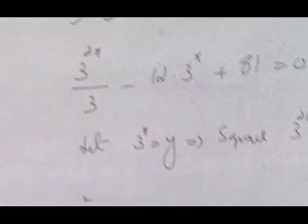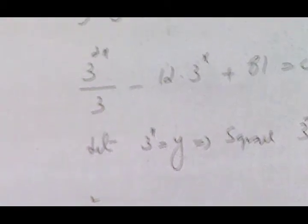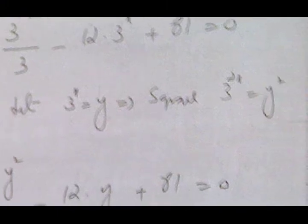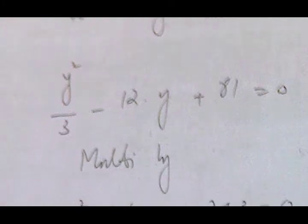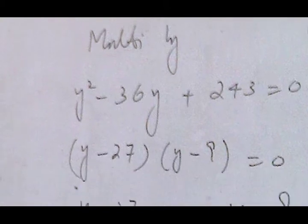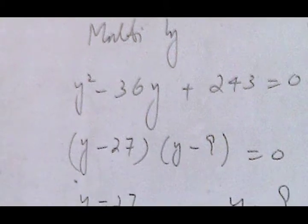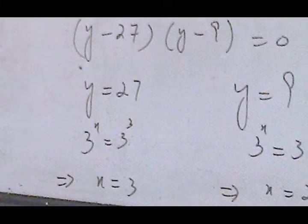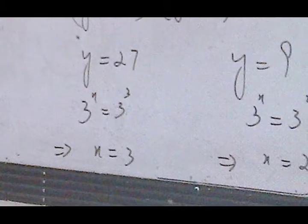In the next question we have 3^(2x−1) minus 12·3^x plus 80 equals 0. We separate 3^(−1): 3^(2x−1) equals 3^(2x) over 3. Multiplying by 3, and letting 3^x equal y so 3^(2x) equals y². After multiplying by 3, the factors are minus 27 and minus 9. When multiplied they give plus 243 and when added give minus 36. So y equals 27 and y equals 9. Since y equals 3^x: 27 equals 3³ so x equals 3, and 9 equals 3² so x equals 2.